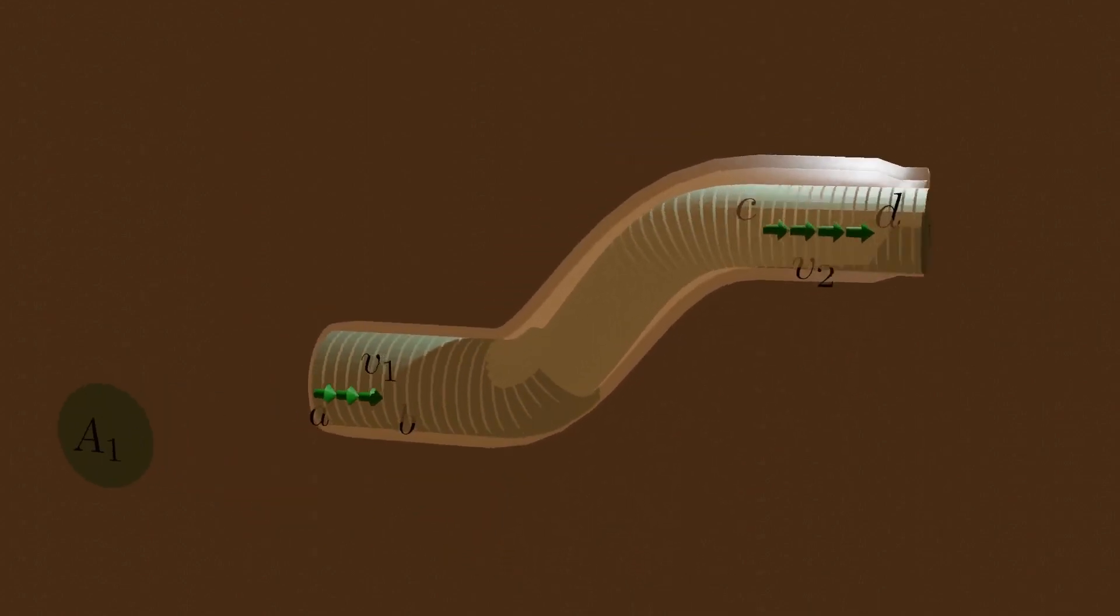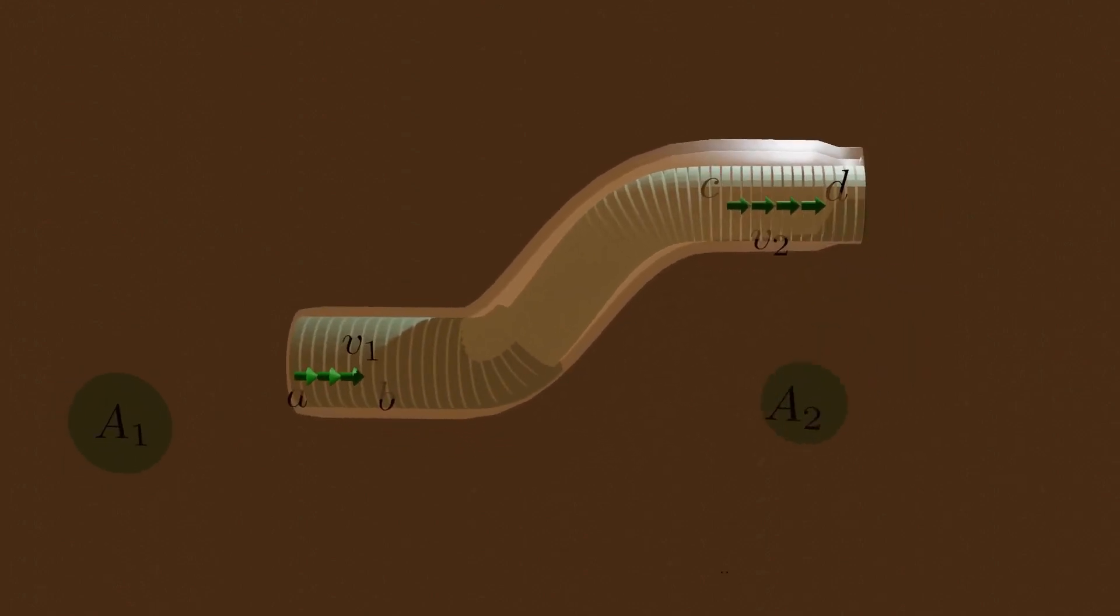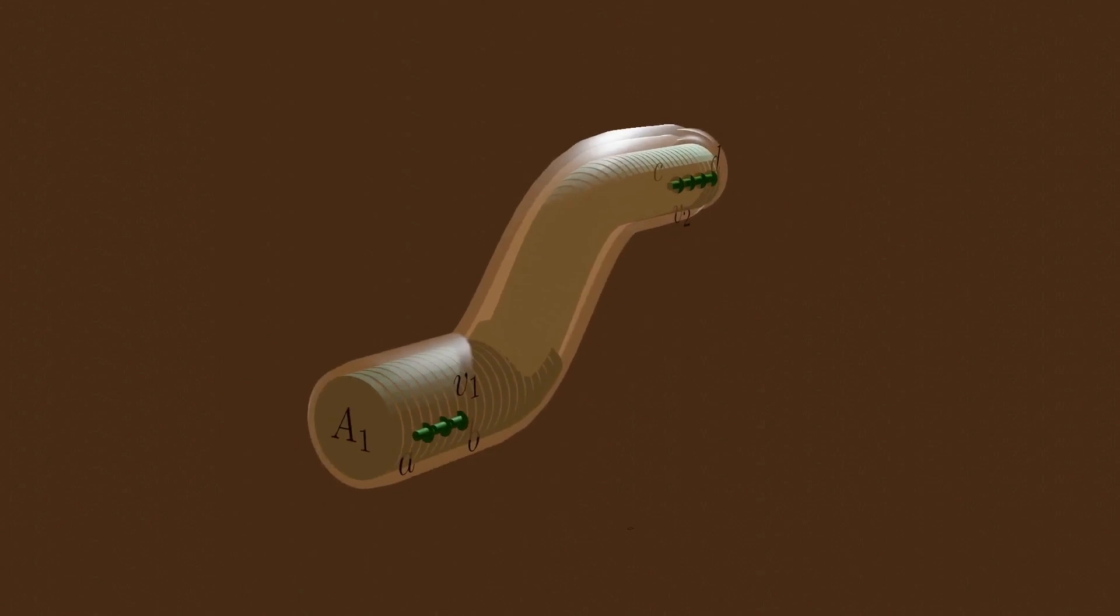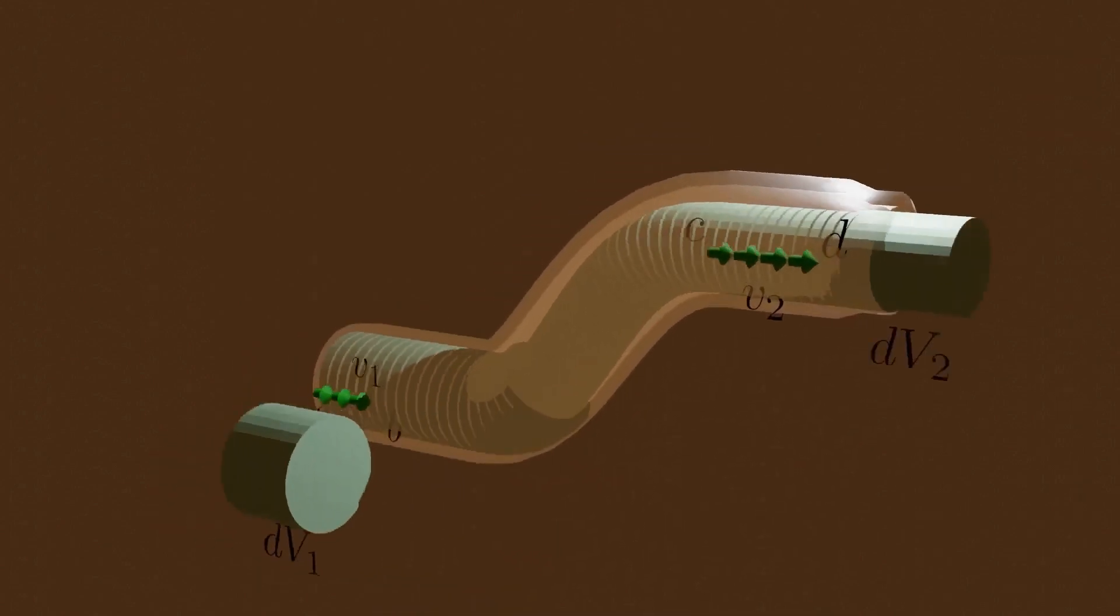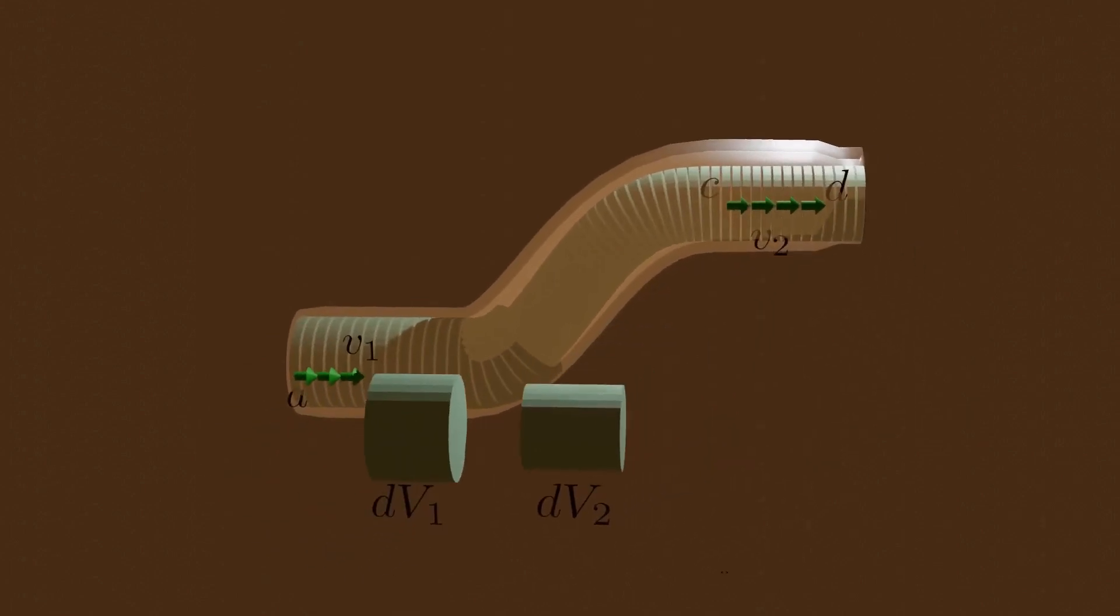Let us consider these areas first. The fluid is incompressible, hence by the continuity equation, the volume of fluid DV passing any cross-section during time DT is the same.